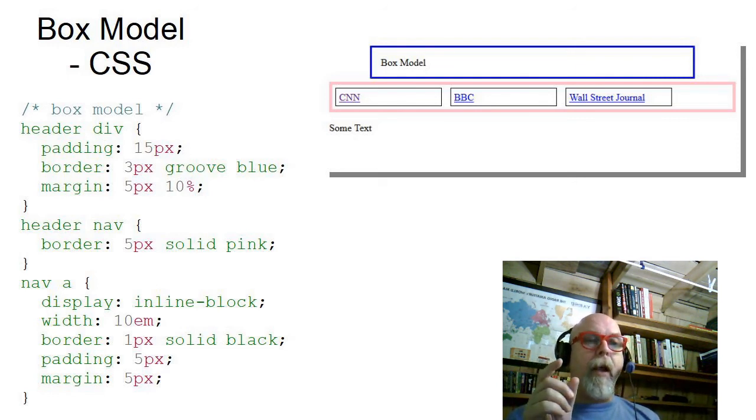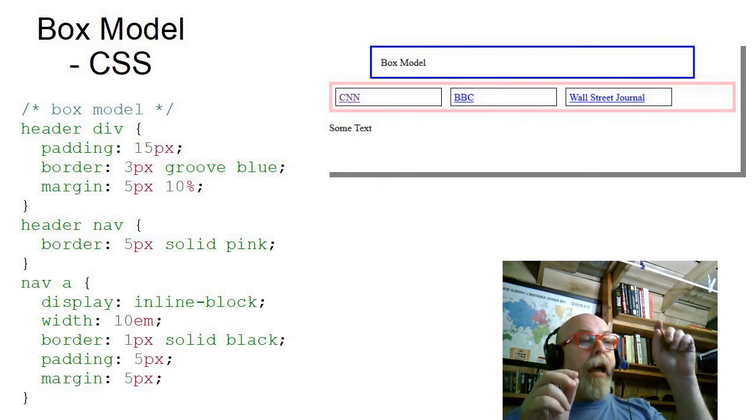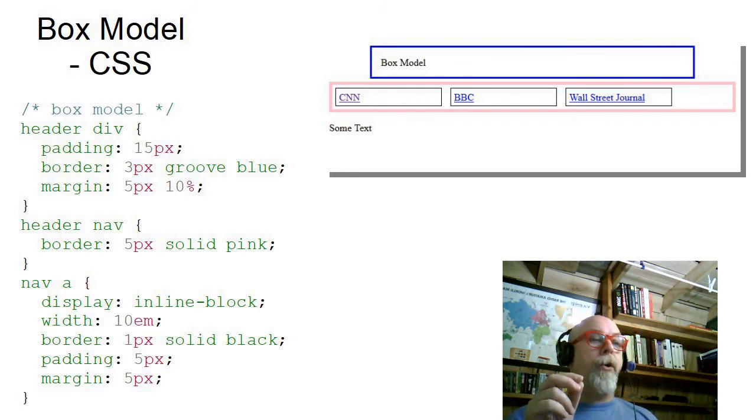And then I put a one-pixel solid black border around them so that it's easy to see. I put a five-pixel padding inside the border and then a five-pixel margin all the way around the border, which makes those even kind of feel like buttons, sort of, don't they? Even though they're not, we've kind of styled them to look that way.